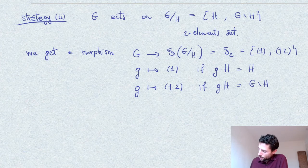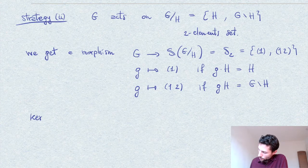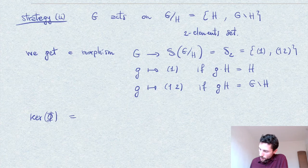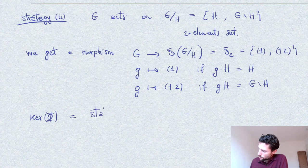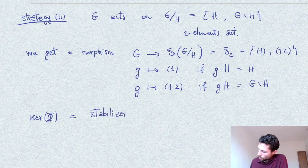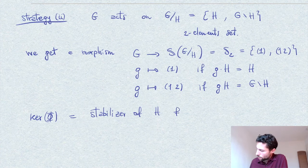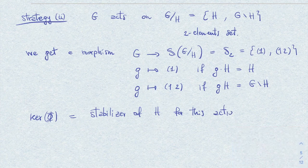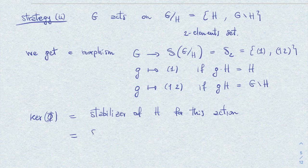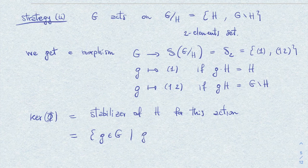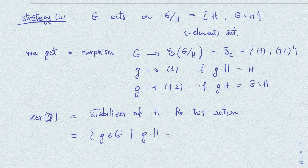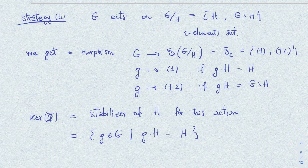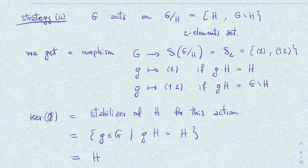So now the kernel of this morphism, which is the stabilizer of H for this action, that is the set of elements g in G such that the action on H is invariant or as the identity. And of course we know that this set is equal to H. And this concludes the proof of what we wanted to show.